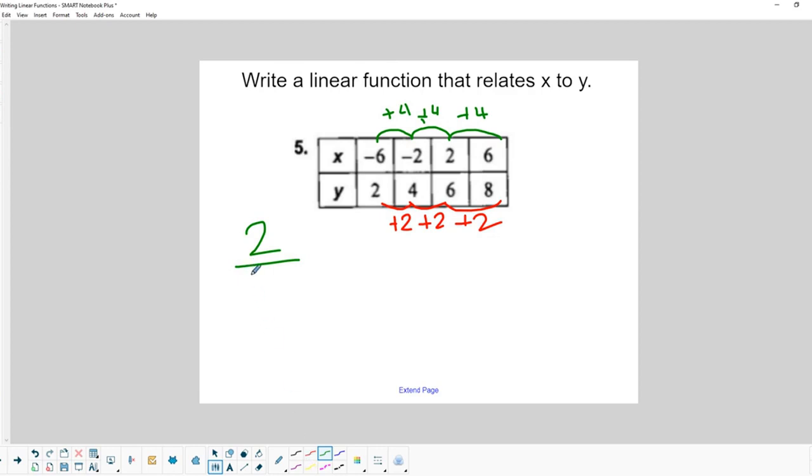So our change in y over our change in x is 2 over 4, which simplifies to be 1 half. 1 half, and that's m. So our m, in this case, is 1 half.